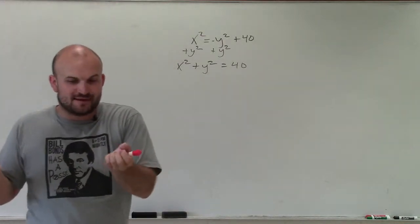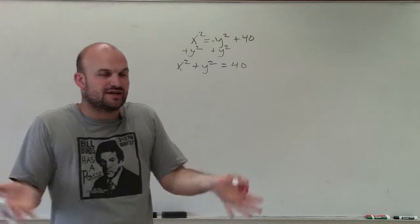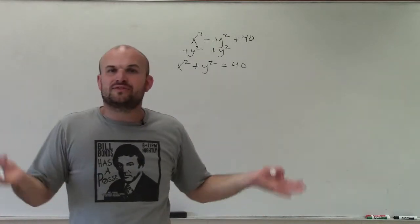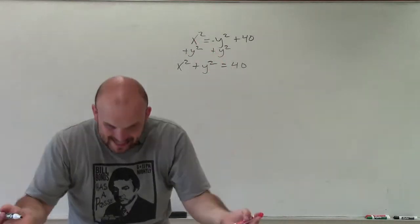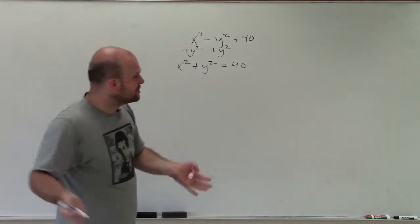meaning the distance from my center to my vertices and co-vertices are going to be the same. So therefore, there is no major minor axis. They're all the same, which means I have a radius and I have a circle.